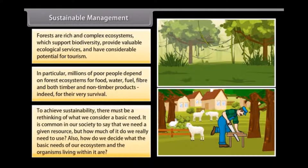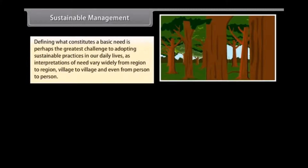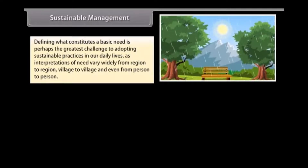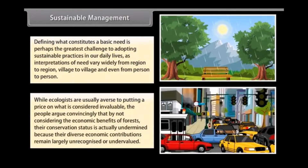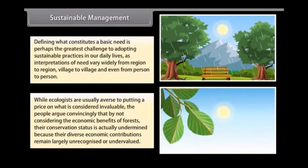To achieve sustainability, there must be a rethinking of what we consider a basic need. How much of a given resource do we really need to use, and how do we decide what the basic needs of our ecosystem and the organisms living within it are? Defining what constitutes a basic need is perhaps the greatest challenge to adopting sustainable practices, as interpretations vary widely from region to region and person to person. Ecologists argue that by not considering the economic benefits of forests, their conservation status is actually undermined because their diverse economic contributions remain largely unrecognized or undervalued.